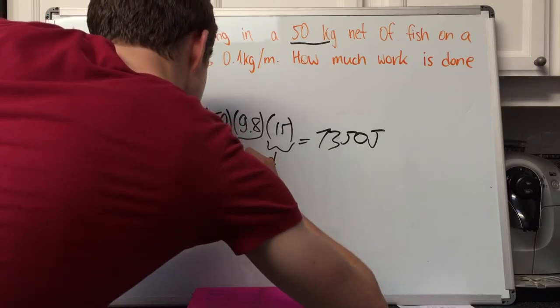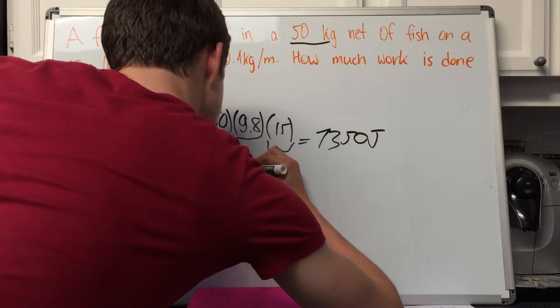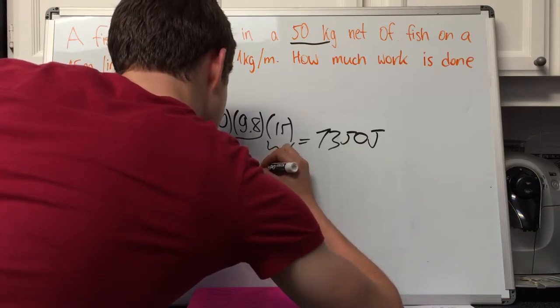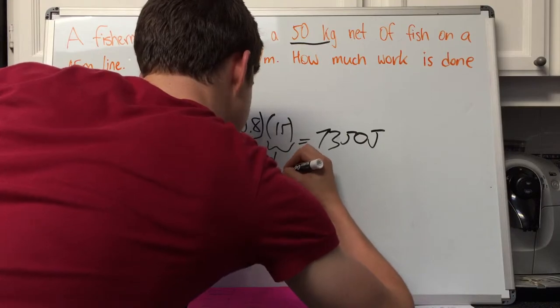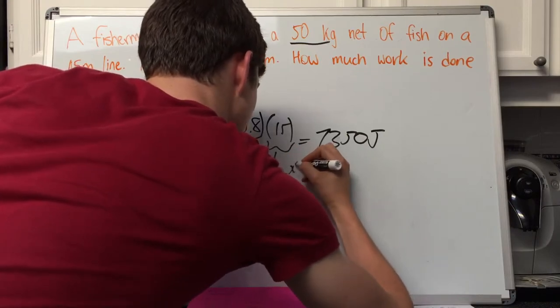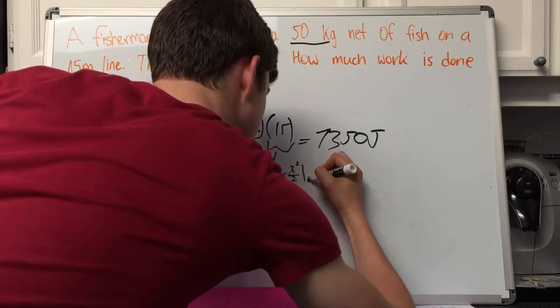We throw dx at the end, and therefore we end up with equals 0.98 times (15x minus x squared over 2) from 0 to 15.